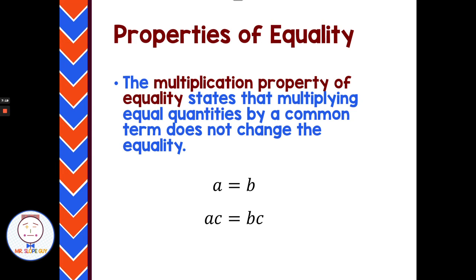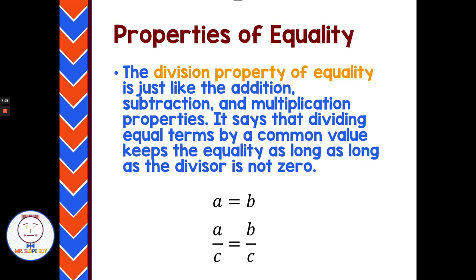The multiplication property of equality states that multiplying equal quantities by a common term does not change the equality. If A equals B, then A times C equals B times C. The division property of equality is similar — dividing equal terms by a common value keeps equality, as long as the divisor is not zero. Dividing by zero messes everything up, so as long as it's not zero, we can divide any amount we want to either side and it remains equal.